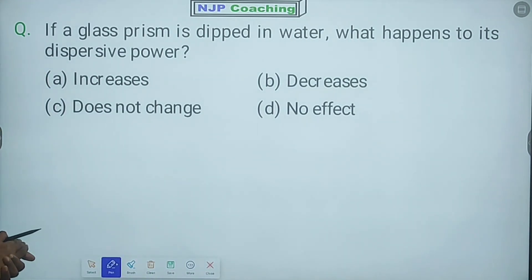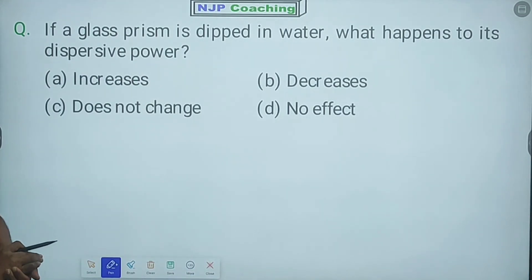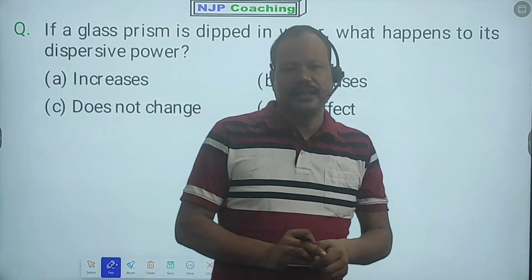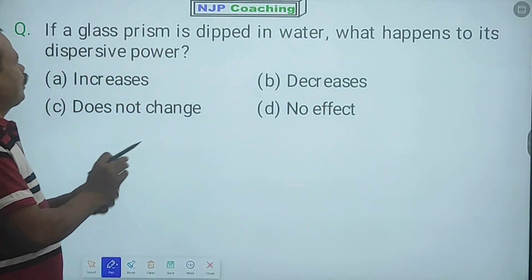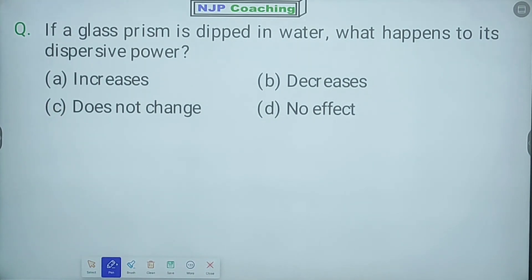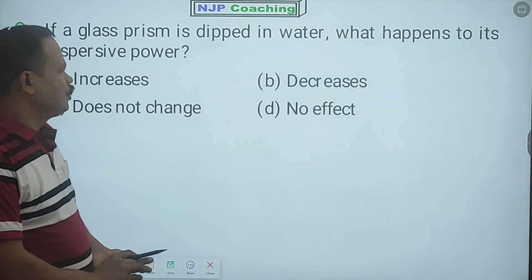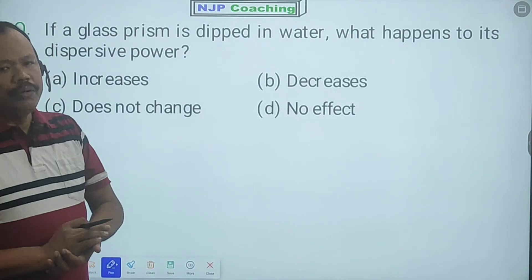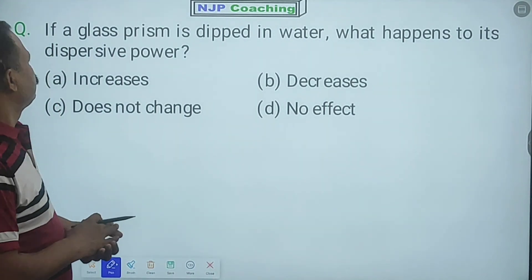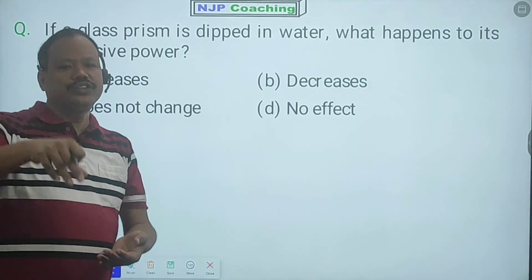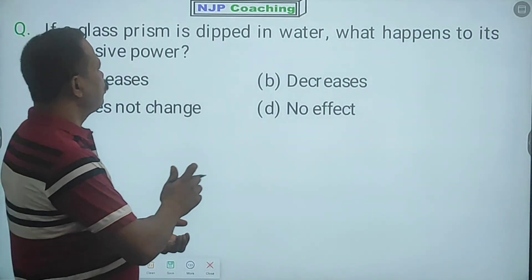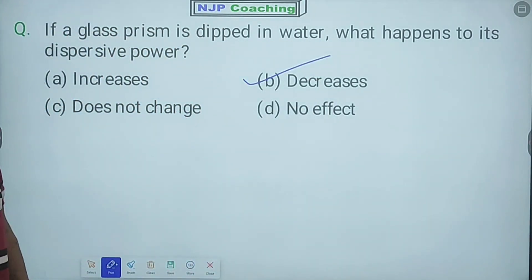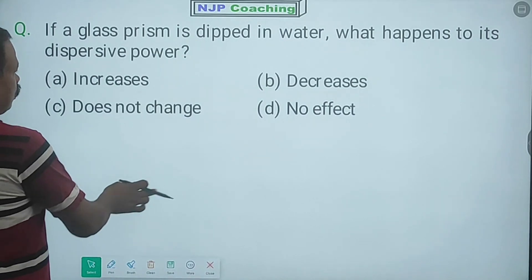Next question: If a glass prism is dipped in water, what happens to its dispersive power? Does it increase or decrease? Dispersive power - that means dispersion, how the prism disperses white light. When the prism is in water, the dispersive power will decrease. Water is a denser medium. Okay? Next.